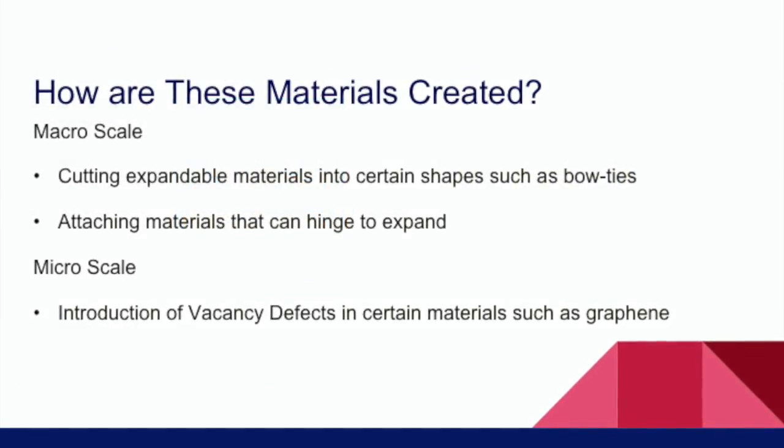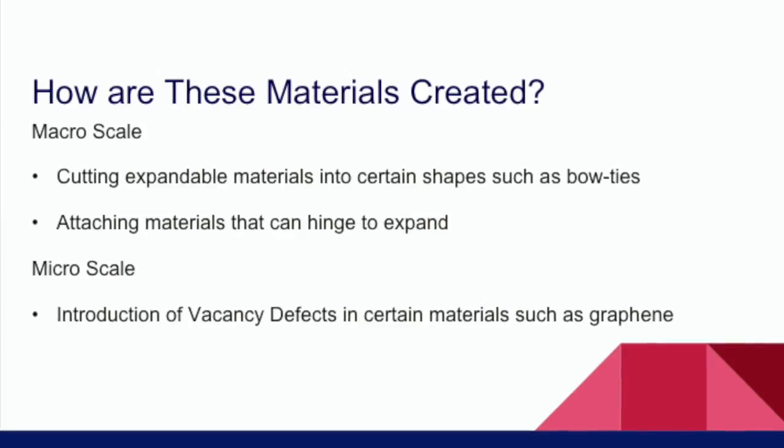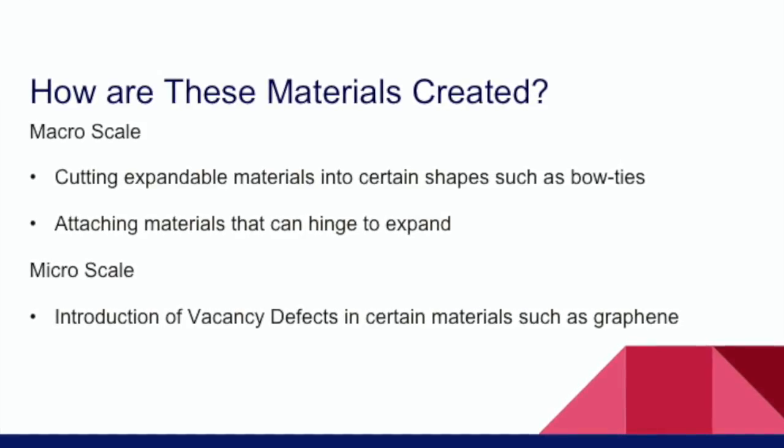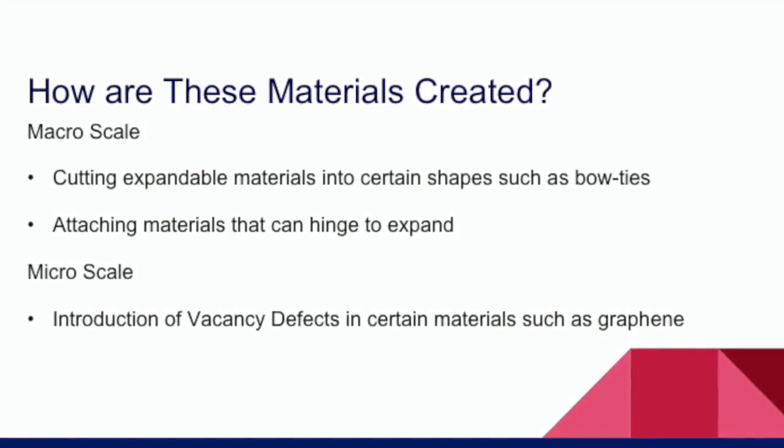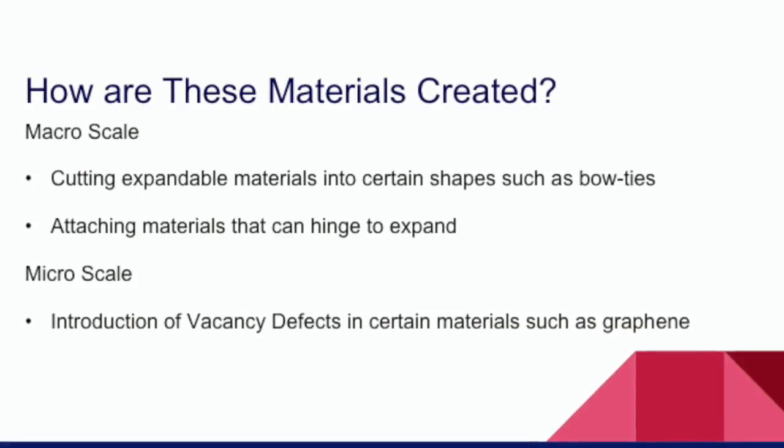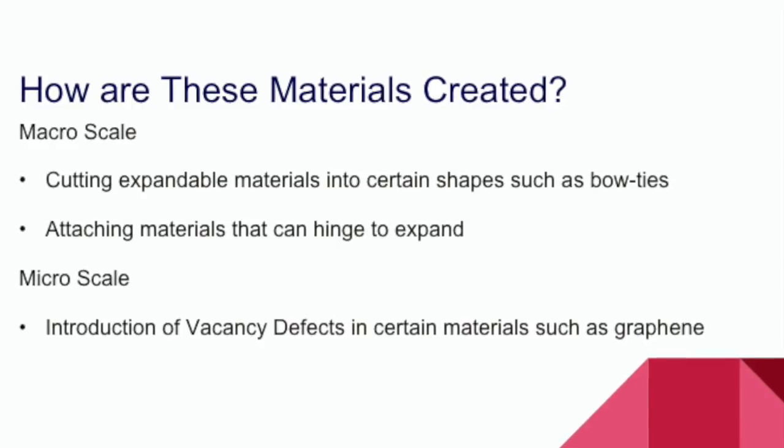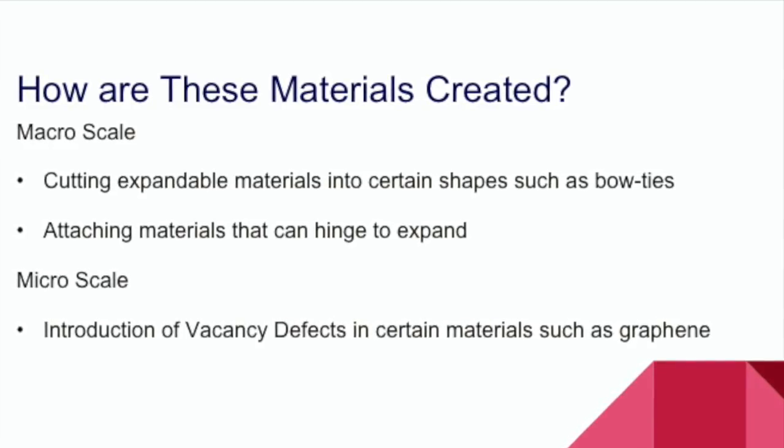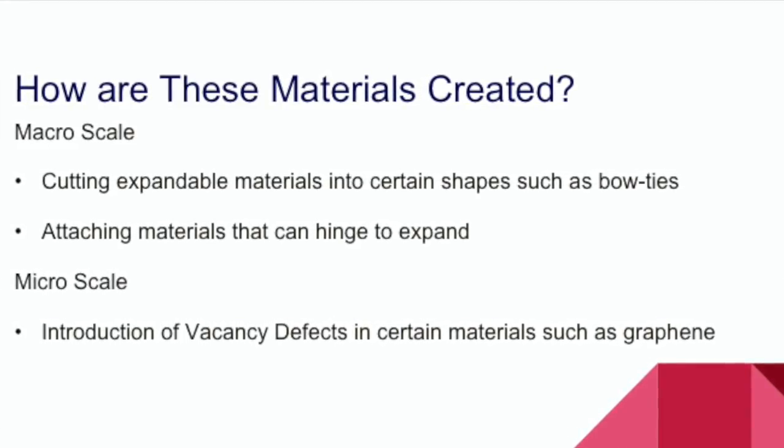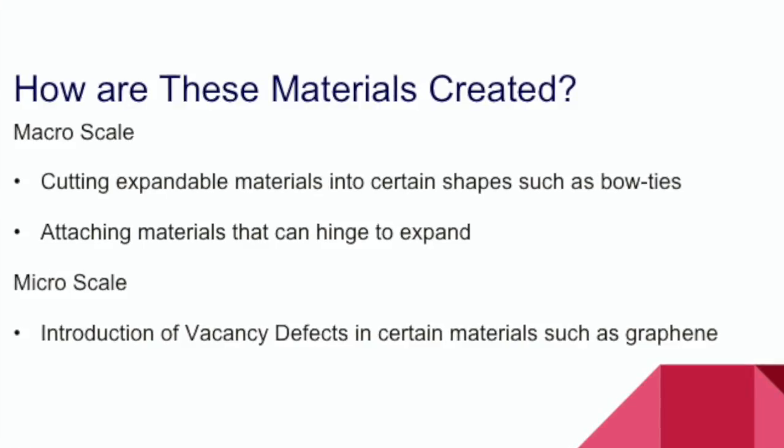Negative Poisson's Ratio materials can be created by cutting material into certain shapes. There are a variety of shapes that can create this effect, such as bow ties or odd triangular patterns. On the micro scale, one can create negative Poisson's Ratio by introducing vacancy defects in certain materials such as graphene. Note, these materials do not show the drastic expansion in the lateral direction, but they still do expand.